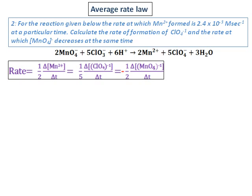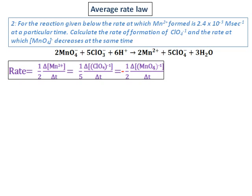Simply write the rate equation as shown, and make sure the equation is balanced. Remember to divide the rate of each reactant and product by their stoichiometry. That's why there is a one half in front of Mn²⁺ and one fifth in front of ClO₄⁻. MnO₄⁻ has a half coefficient and its concentration decreases, so there is a negative sign in front of it. There is no negative sign for Mn²⁺ and ClO₄⁻ because they are products and their concentration increases.